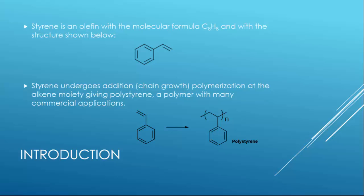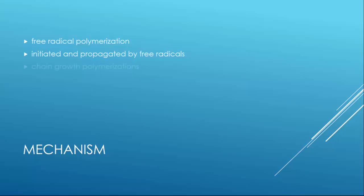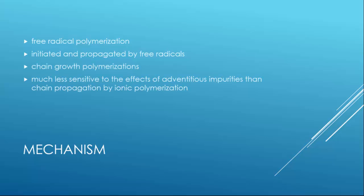The polymerization of styrene is carried out by free radical polymerization, in which polymerization is initiated and propagated by free radicals. This is the most commonly used technique for chain growth polymerization as it is much less sensitive to the effects of adventitious impurities than chain propagation by ionic polymerization. The free radical reactions with the double bond of the vinyl monomers are not as selective as ionic attack, so this means that you could have some side products involved. But the resonance stabilization in styrene, due to the presence of conjugated carbon-carbon bonds, allows the use of the free radical mechanism.